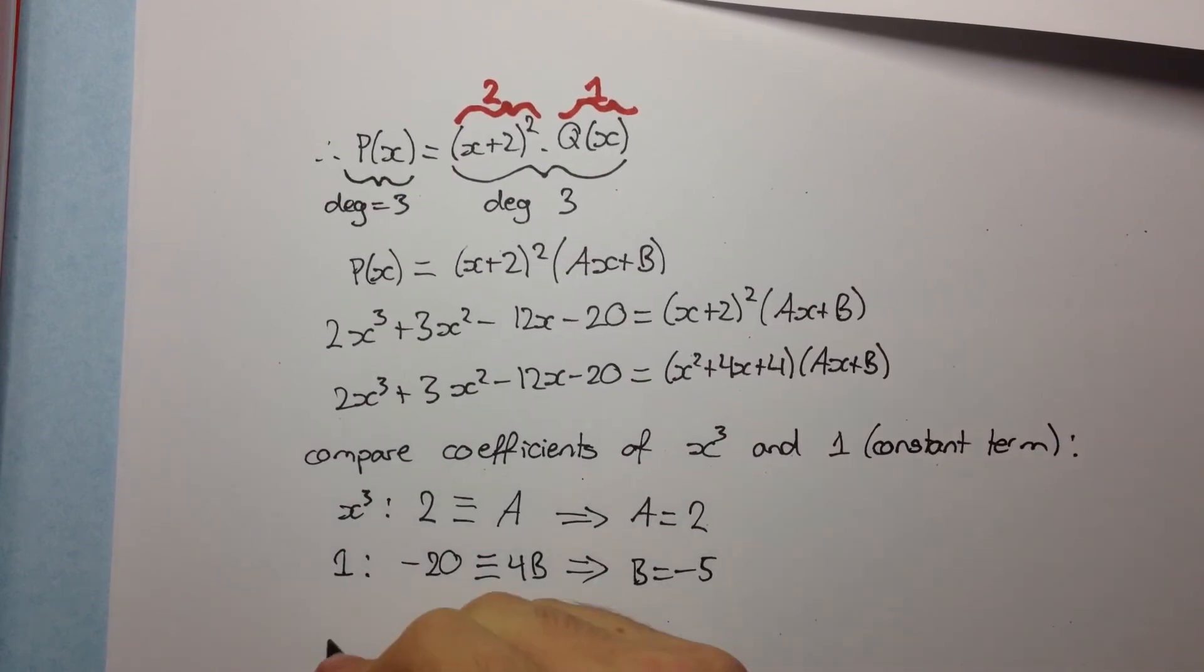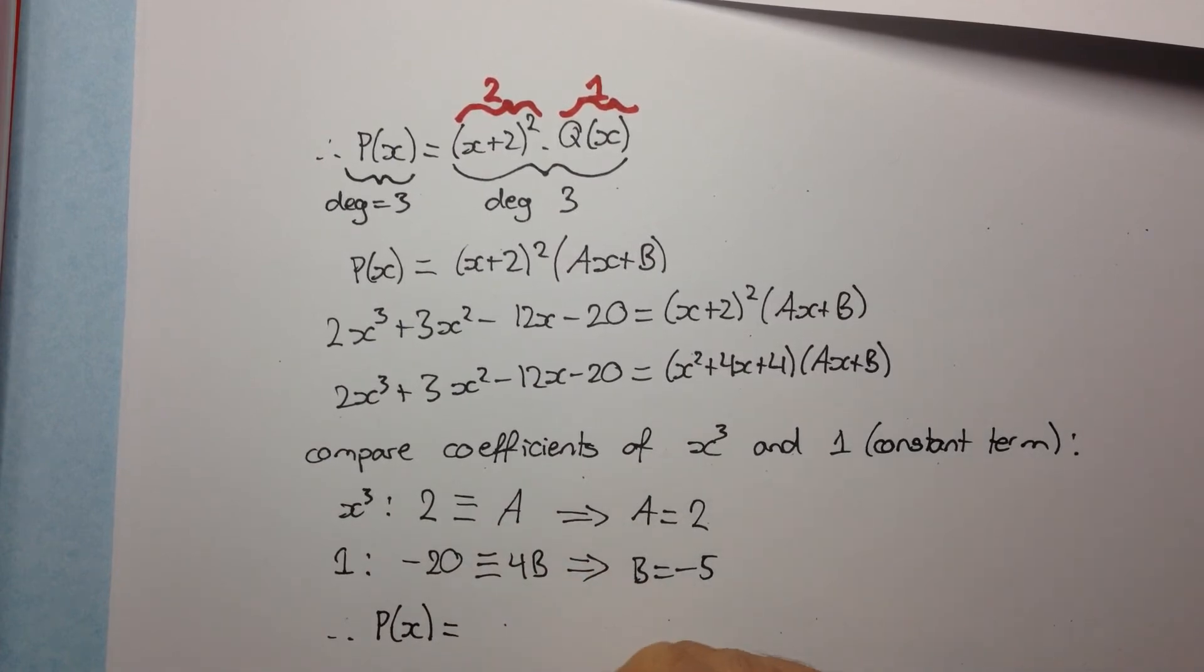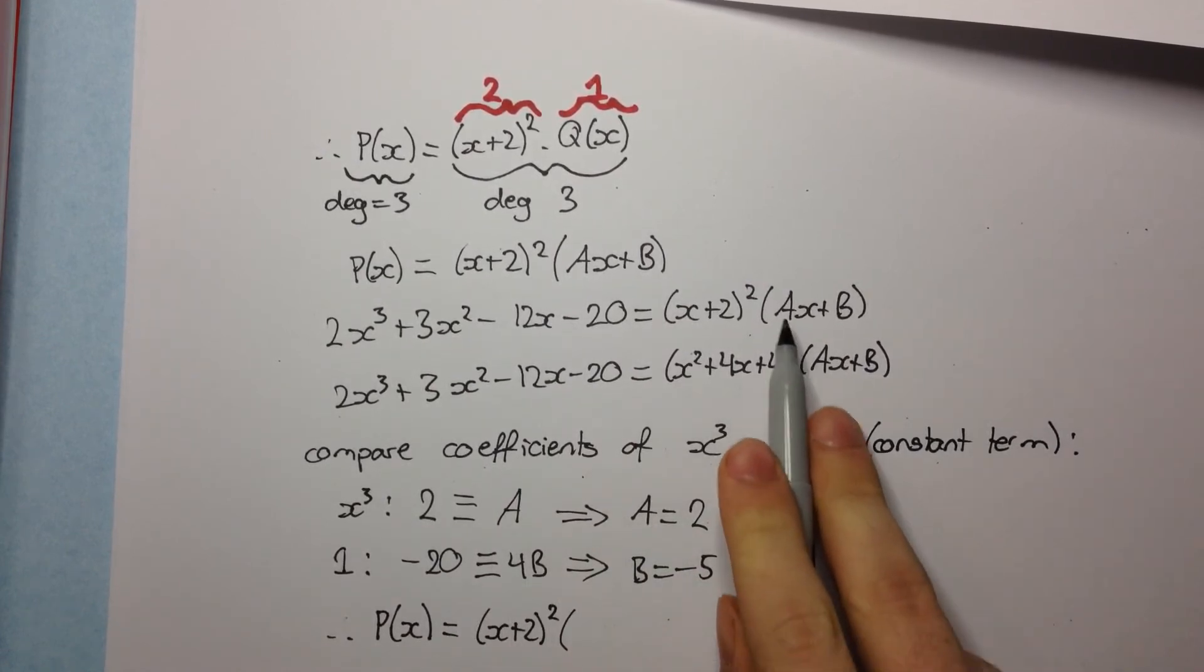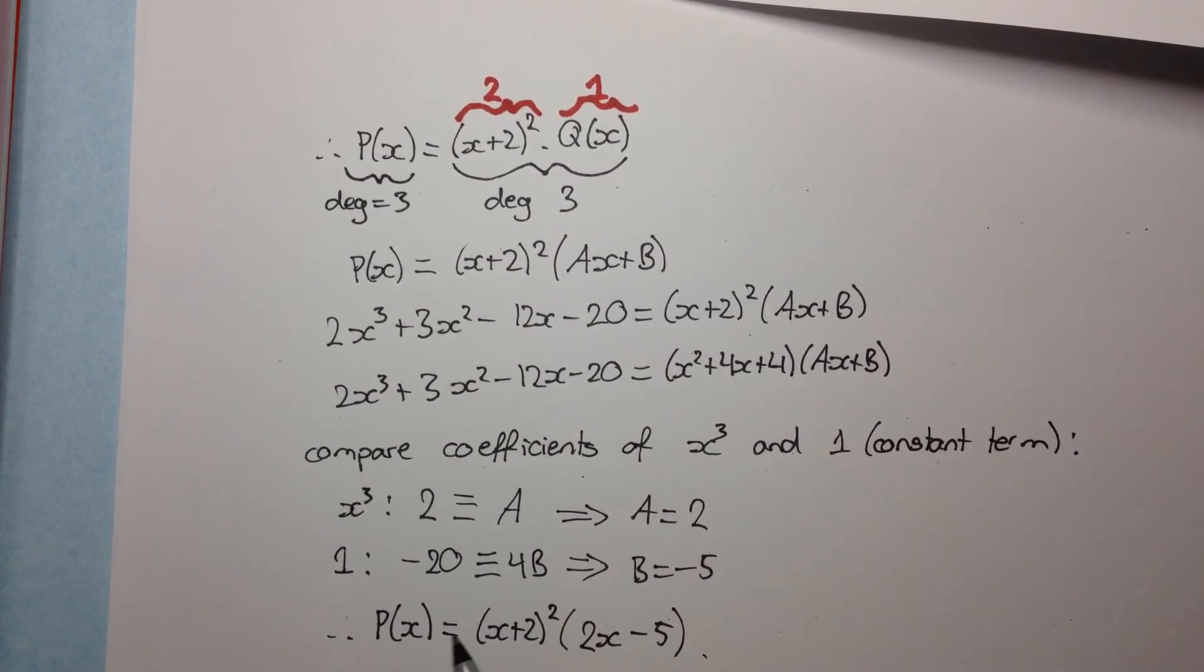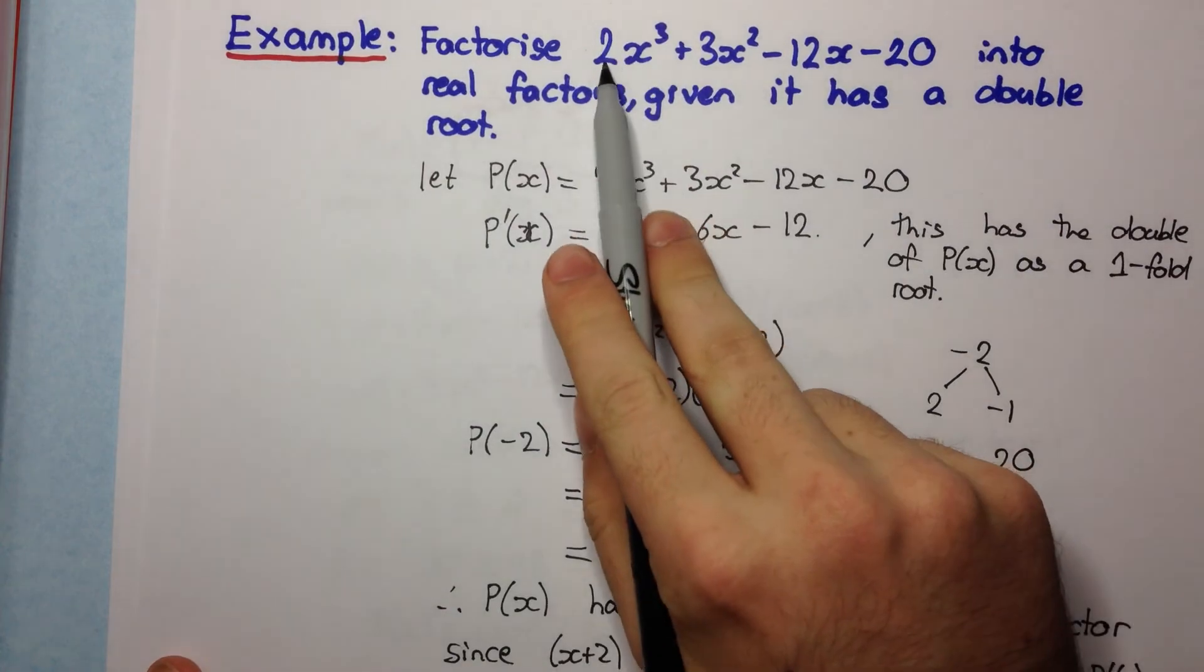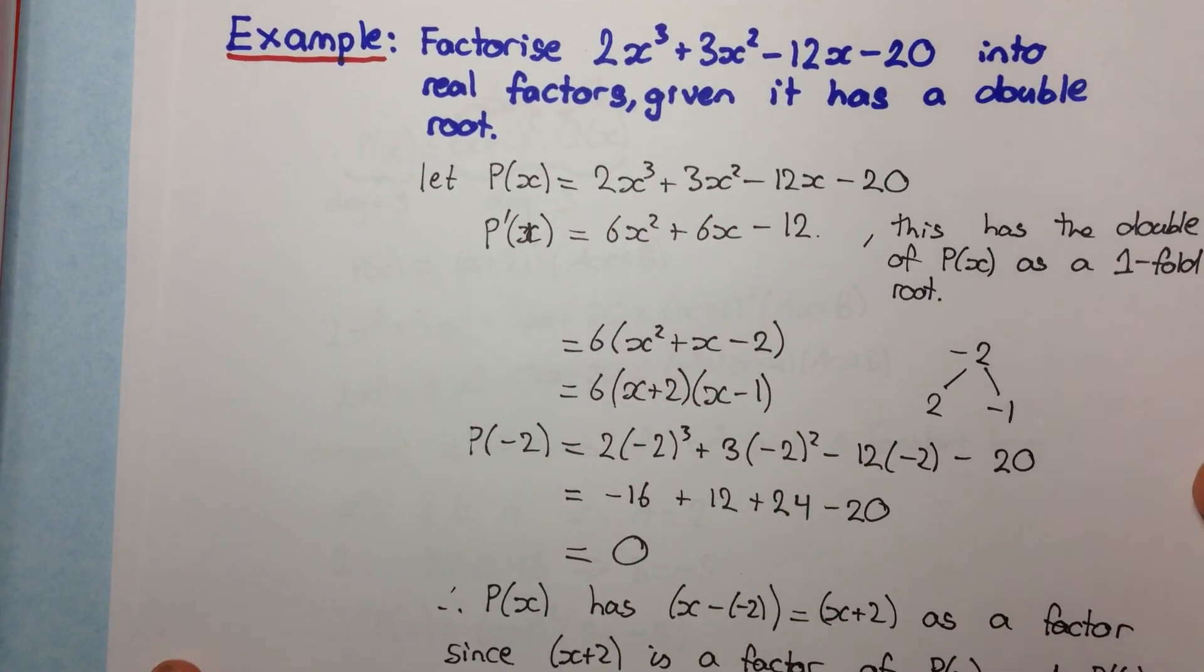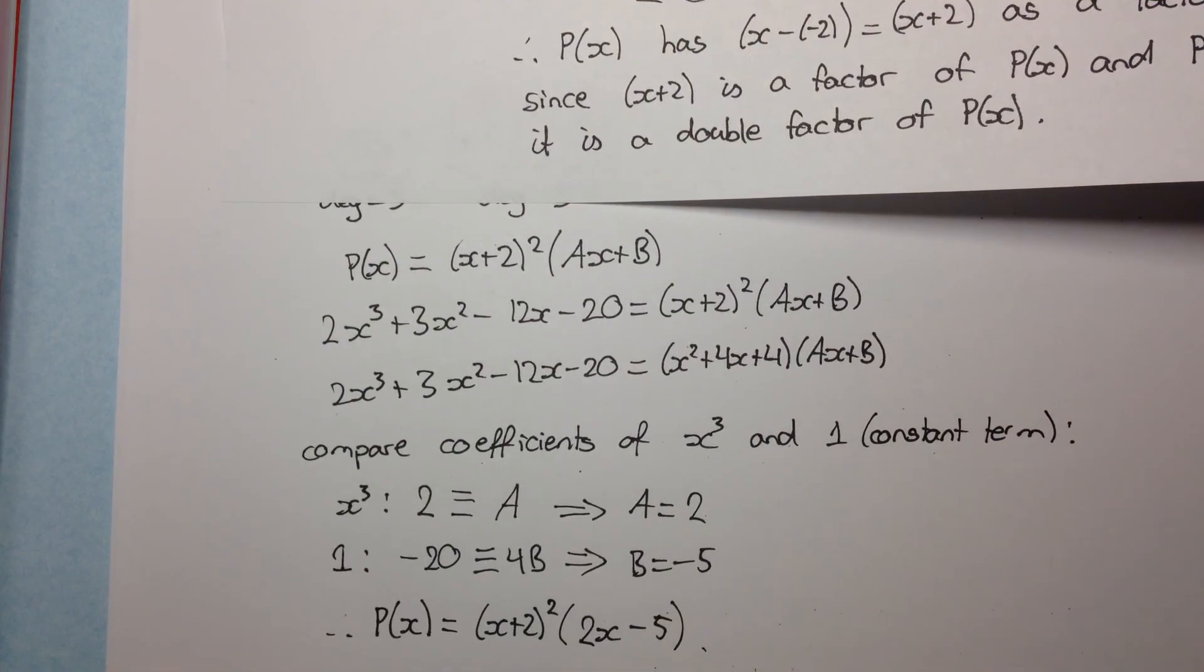Okay, so therefore, we have P(x) is equal to (x + 2)² times... Now Ax + B, where A is 2, so 2x - 5. And that's your final answer. We've factorized this polynomial, 2x³ + 3x² - 12x - 20, into a product of real linear factors. Okay, thank you.